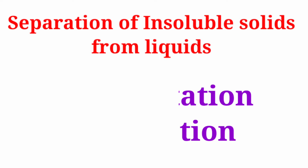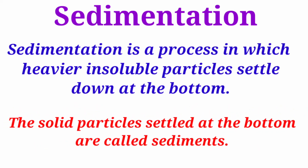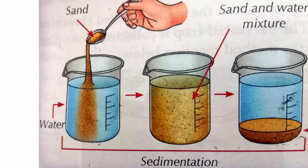The first process we discuss is sedimentation and decantation. Sedimentation is a process in which heavier insoluble particles settle down at the bottom. The solid particles that settle at the bottom are called sediments. For example, if we take sand and water — as you see in this picture, we are adding sand to water.